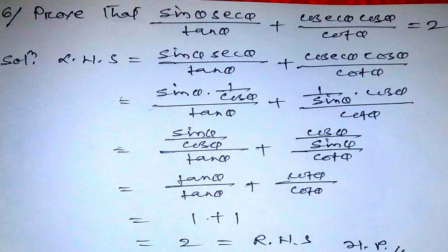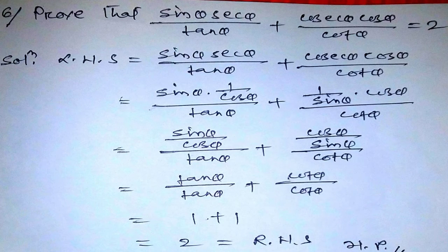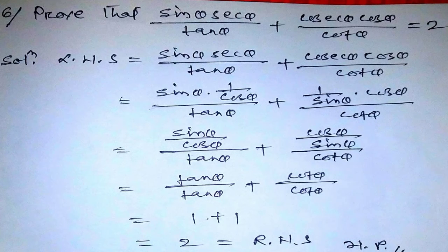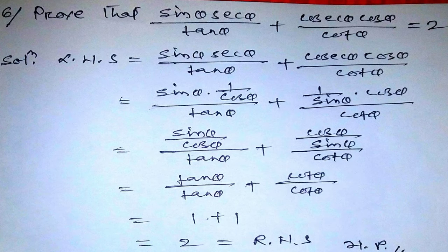Expanding: secθ = 1/cosθ and cosecθ = 1/sinθ. So we get sinθ × (1/cosθ) divided by tanθ, plus cosθ × (1/sinθ) divided by cotθ, which gives (sinθ/cosθ) ÷ tanθ plus (cosθ/sinθ) ÷ cotθ.